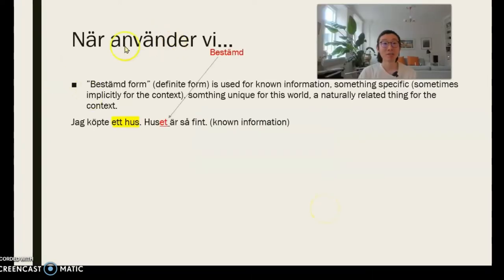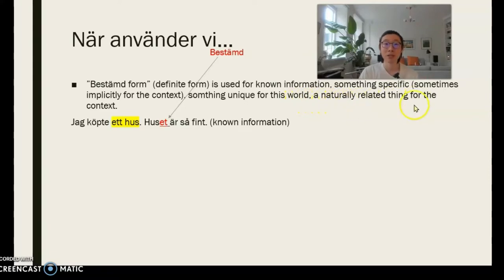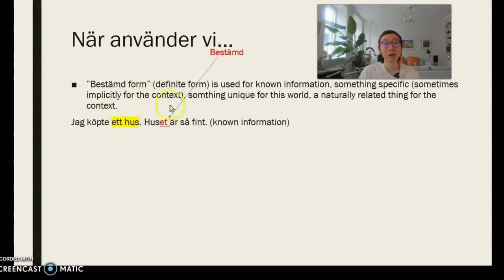So when do we use the definite form? The definite form is used for known information, something specific, something implicitly understood from the context, something unique, or a naturally related thing for the context. Here are some examples. 'Jag köpte ett hus. Huset är så fint.' Here 'huset' is equivalent to 'the house' in English, but in Swedish you can express 'the house' by merely altering the noun to its definite form. 'Huset' is the definite form of 'hus' — and when you change a noun into its definite form, you also need to think about whether it's an en or ett word.